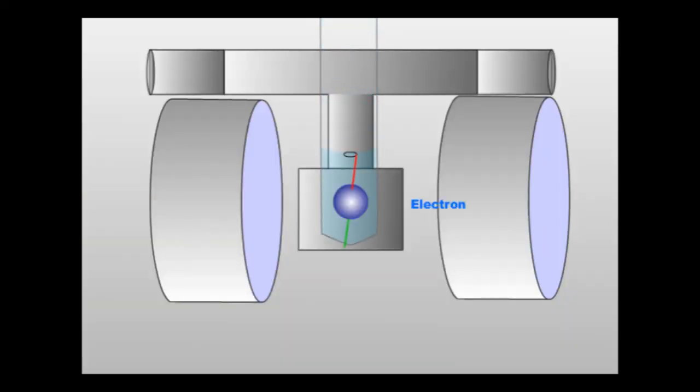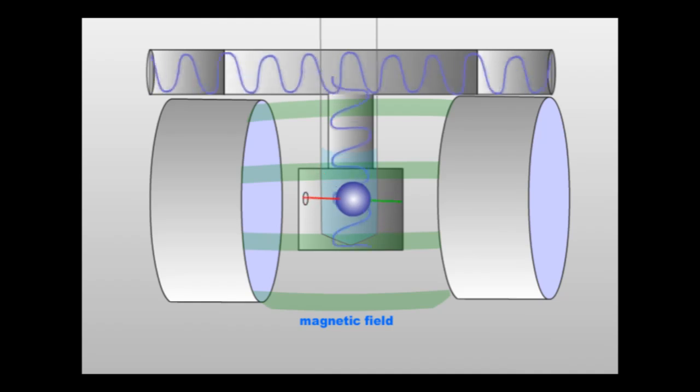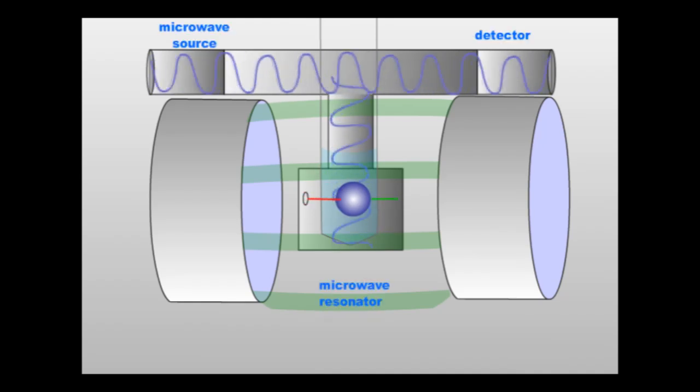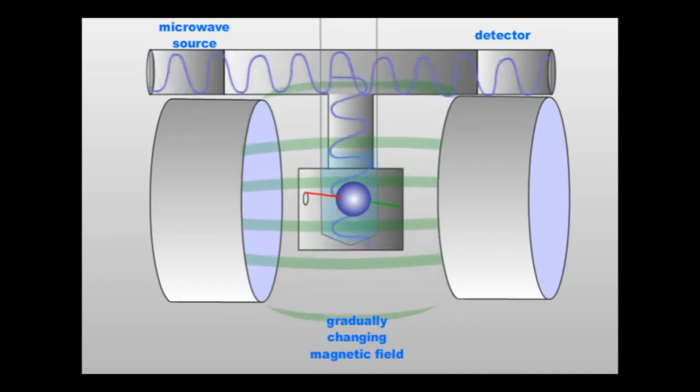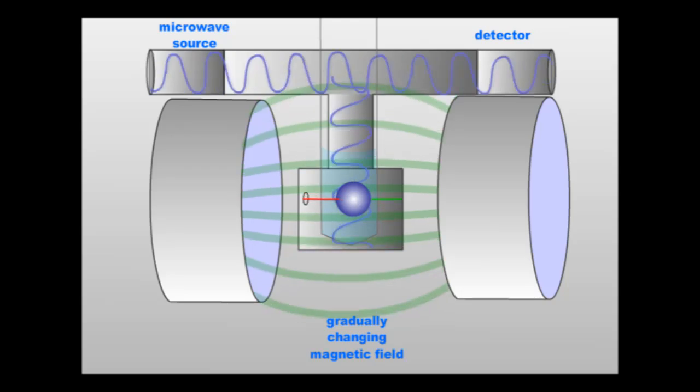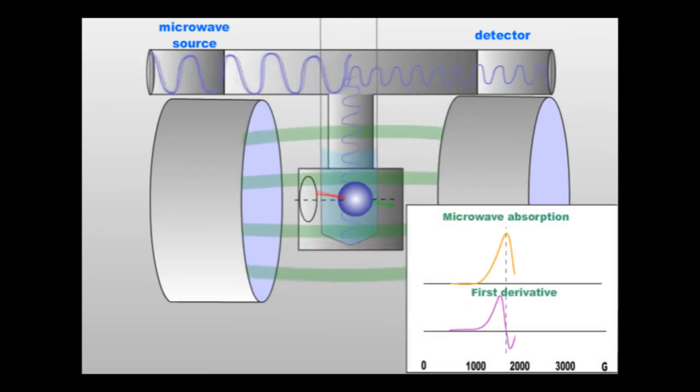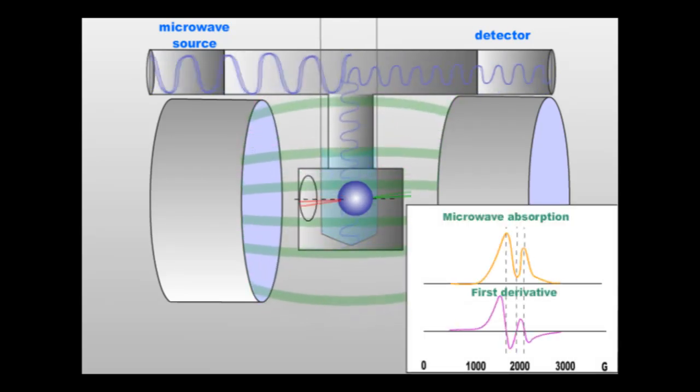ESR is a spectroscopy technique whereby a material is immersed in a strong magnetic field and then absorbs electromagnetic radiation. These materials are paramagnetic, meaning they have just one unpaired electron spin, so the spin is greater than zero.